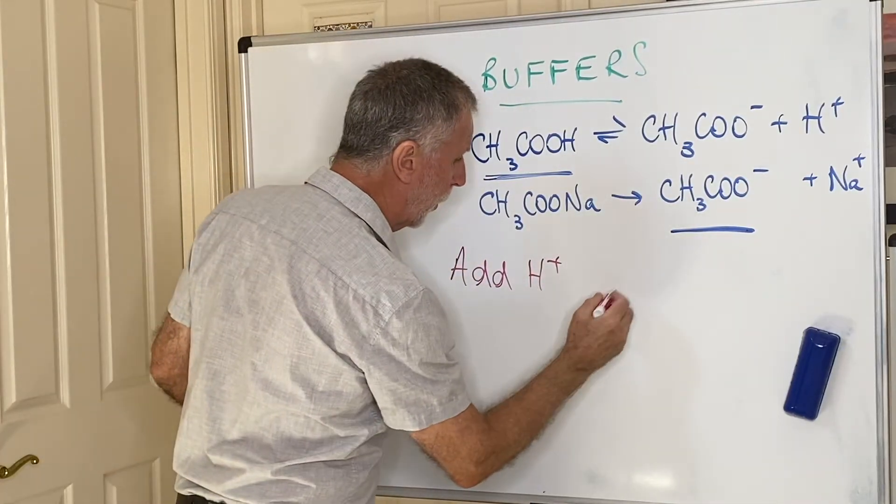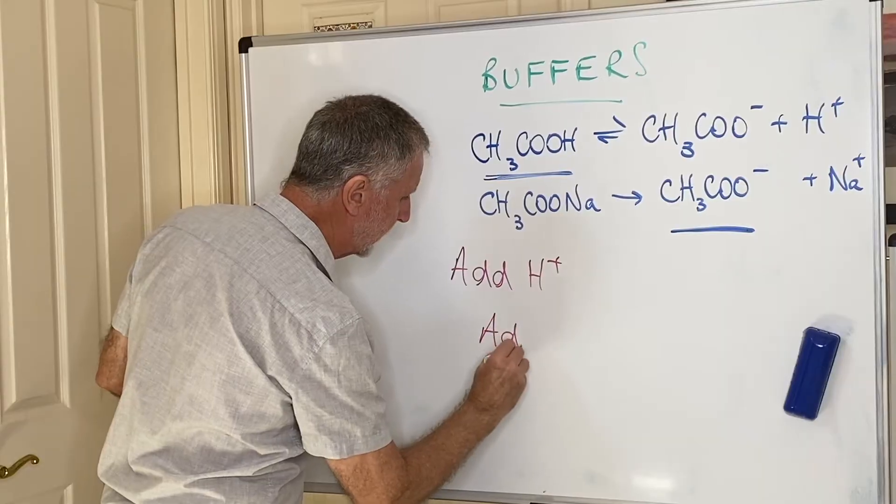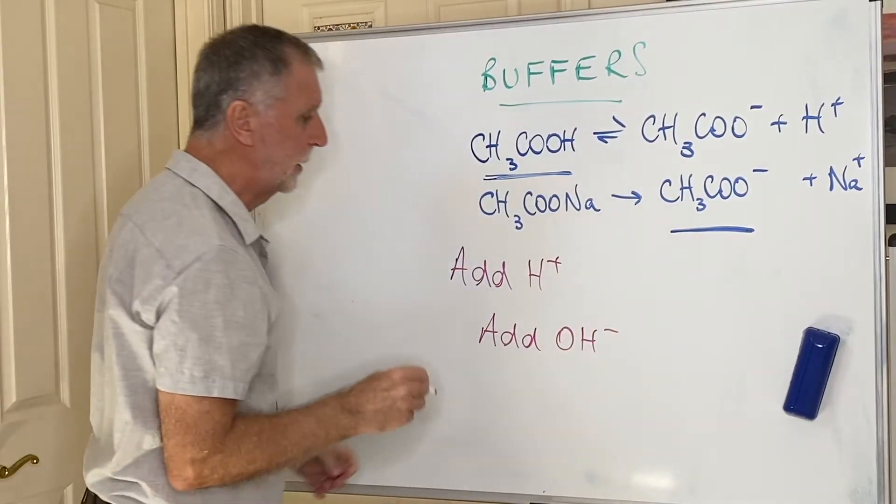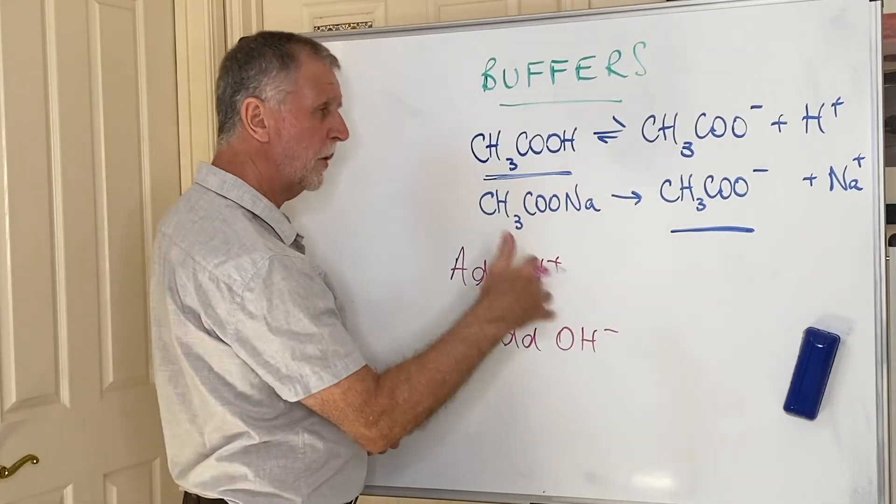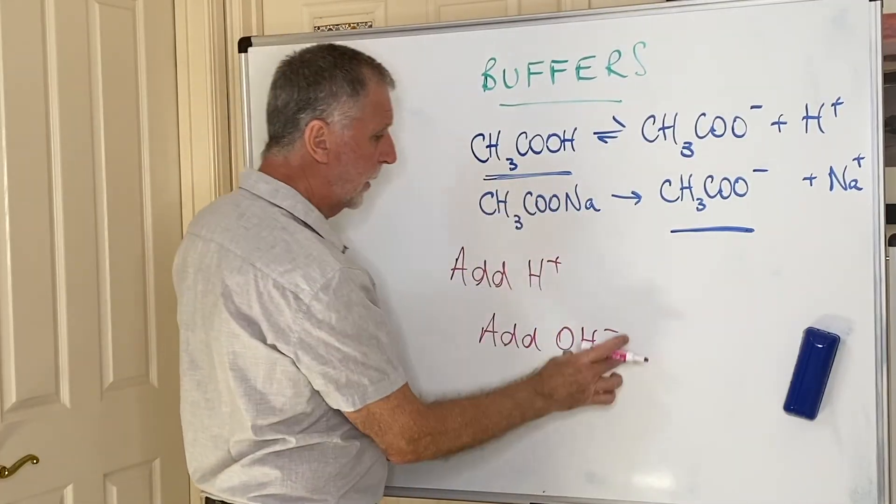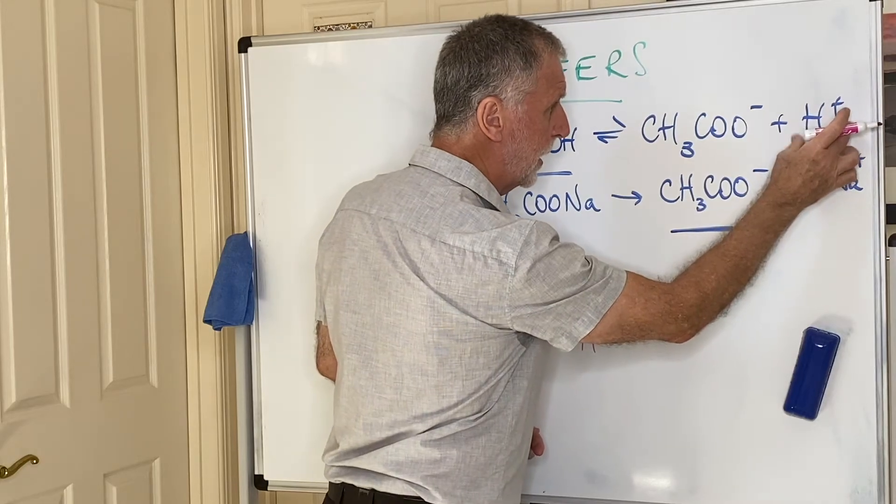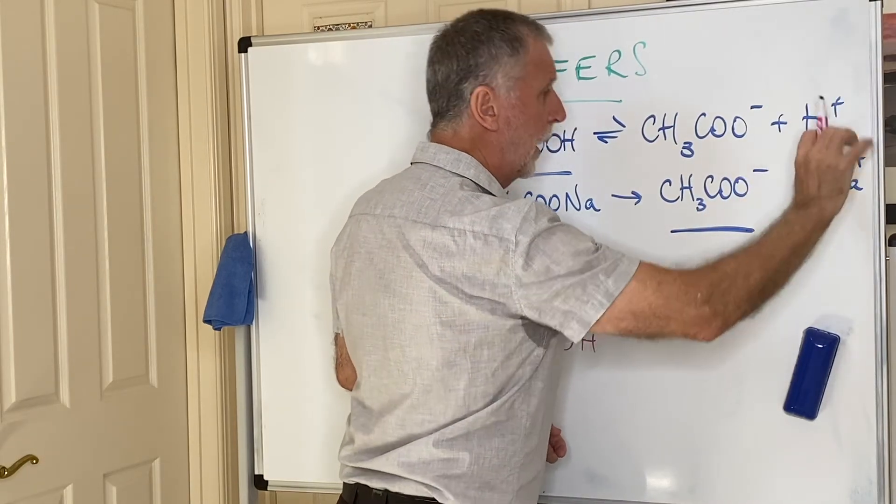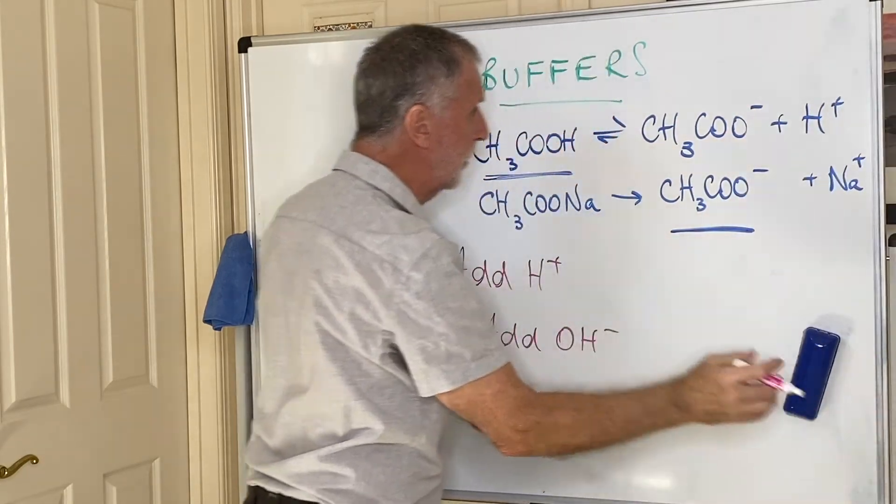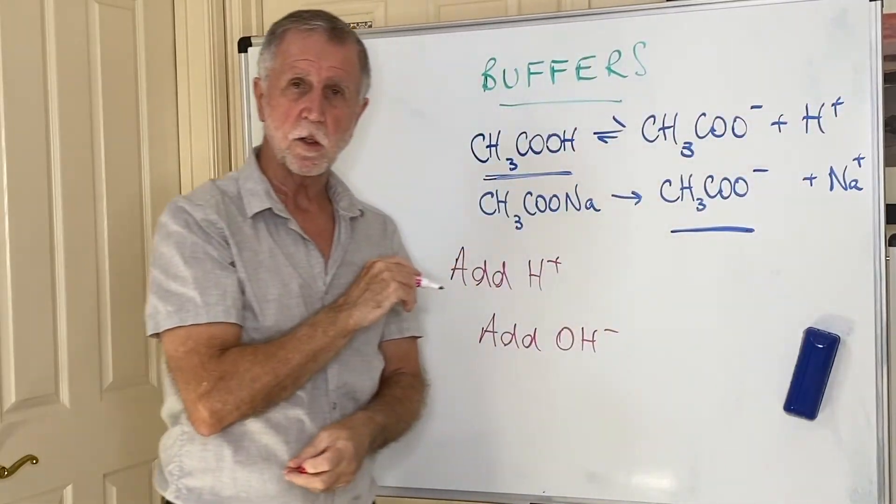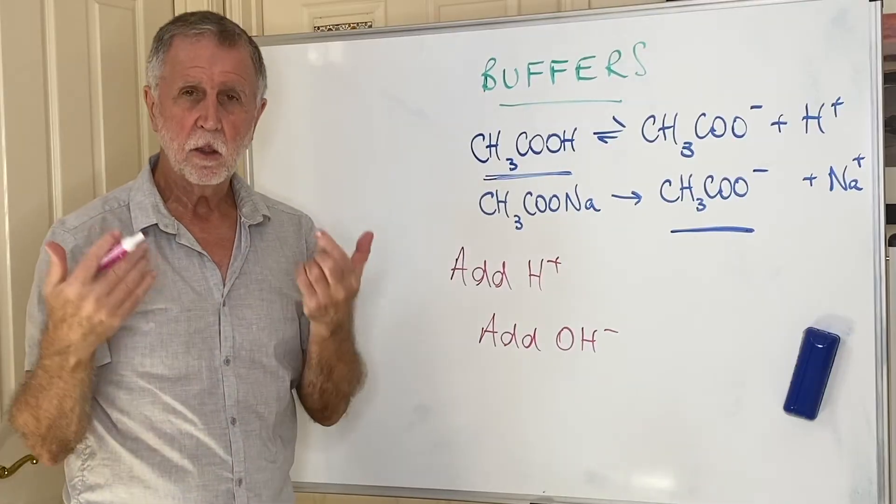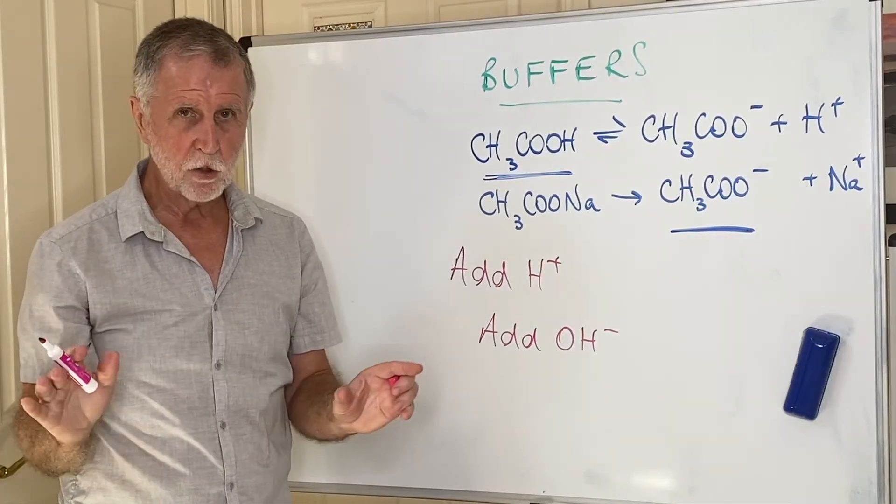Alternatively, what if we add a base, which effectively means adding hydroxide ions? Well, the hydroxide ions, you can look at it from two points of view. They could either react with the H-pluses there and turn them into water, and removing those from the equilibrium would then cause this molecule to dissociate to return those H-plus ions. Again, the H-plus concentration hardly changes.